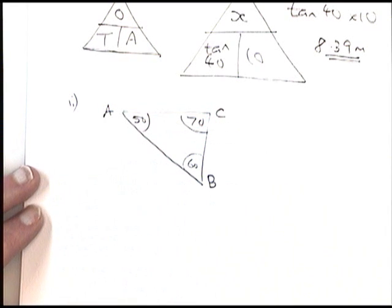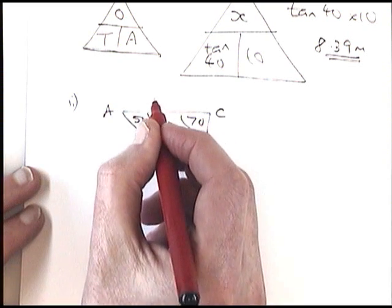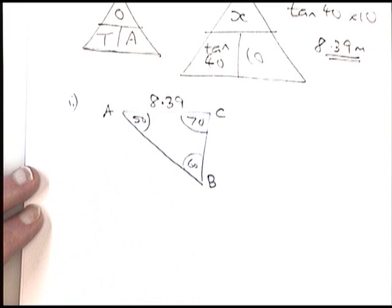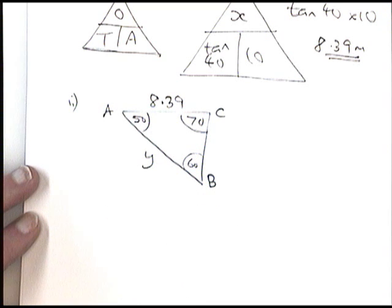So it's not a right-angled triangle, even though it may look like it in the drawing. I know AC because I've just worked it out. That is 8.39. And in this question, I'm trying to find AB, this length down here. It's not a right-angled triangle. So I'm either using the sine rule or the cosine rule.